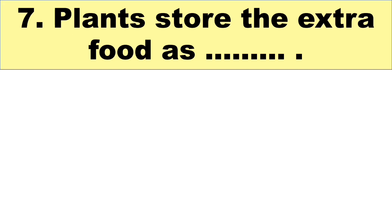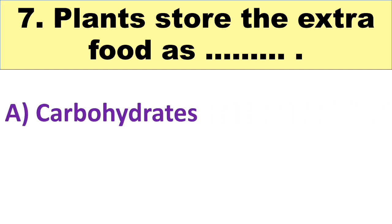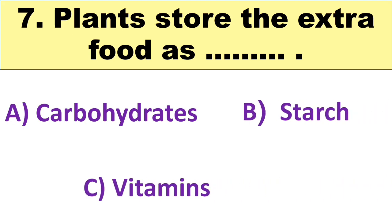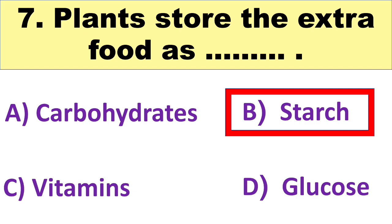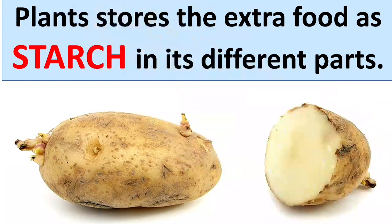Next: plants store the extra food as blank. Your options are A. Carbohydrates, B. Starch, C. Vitamins, and D. Glucose. The right answer is B. Starch. Plants store the extra food as starch in their different parts.